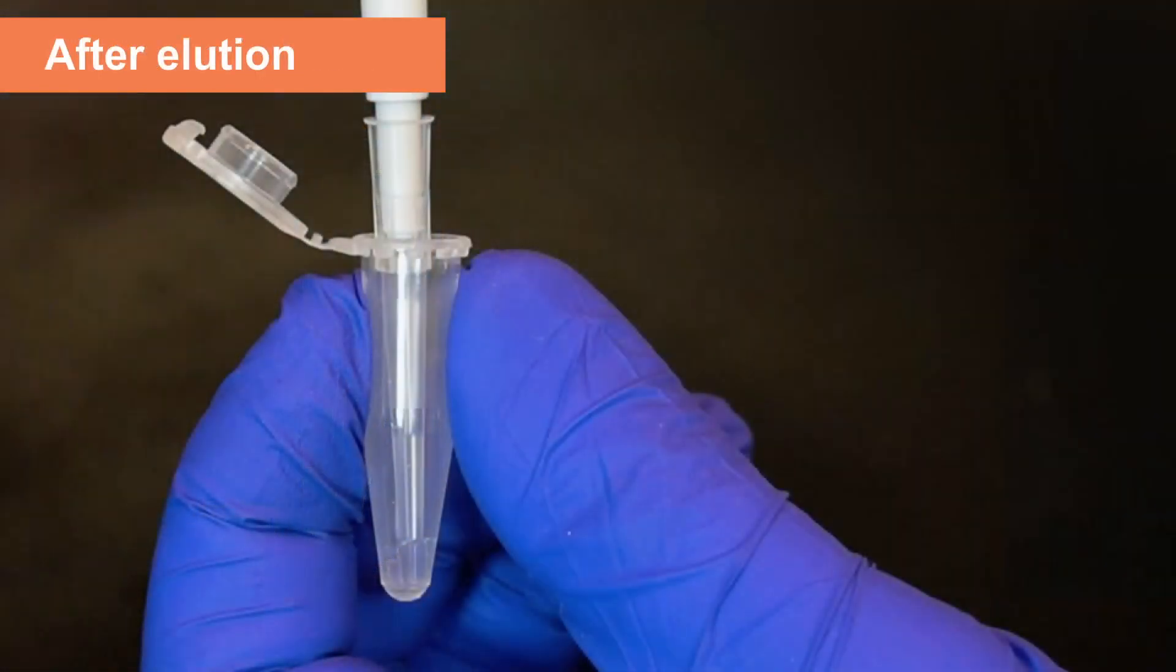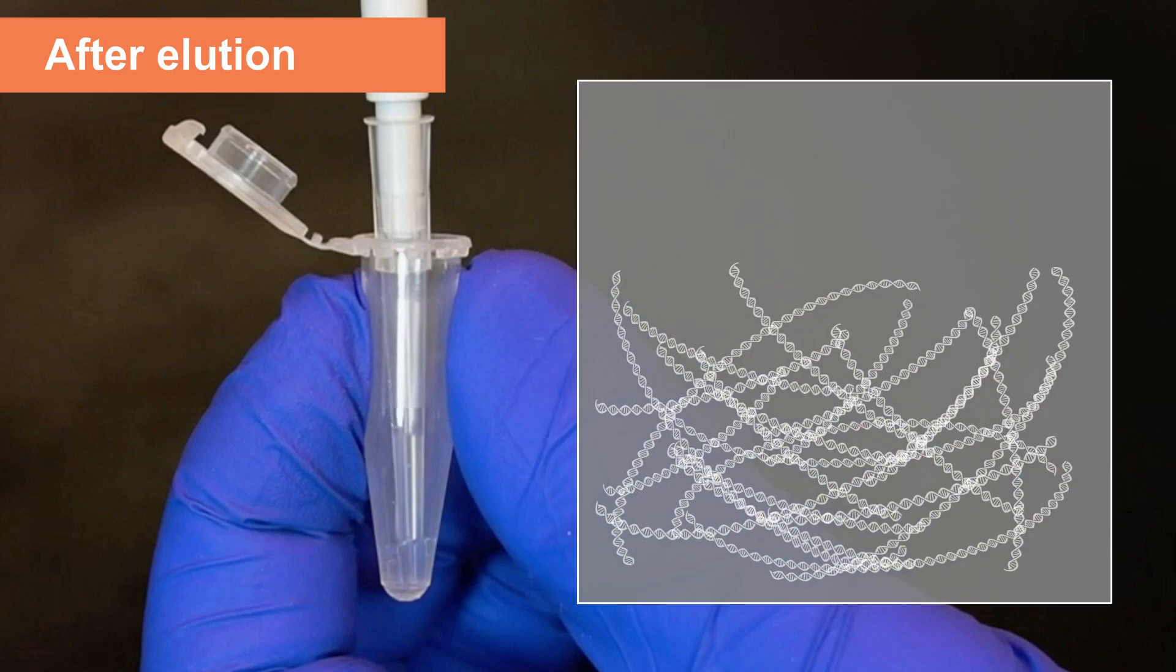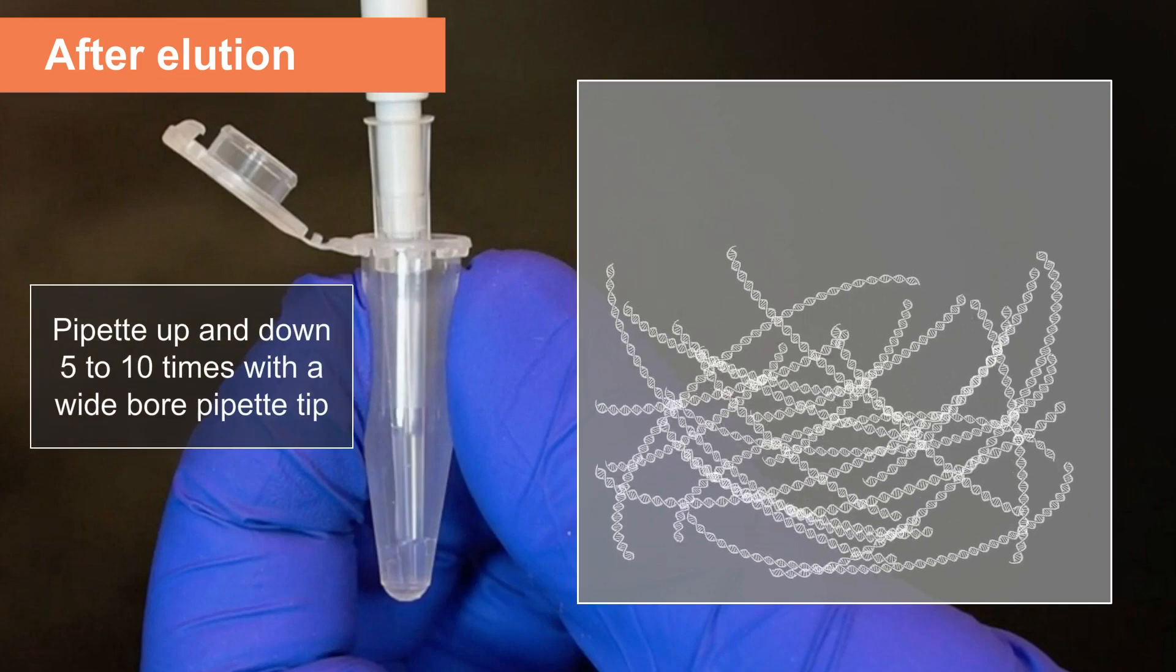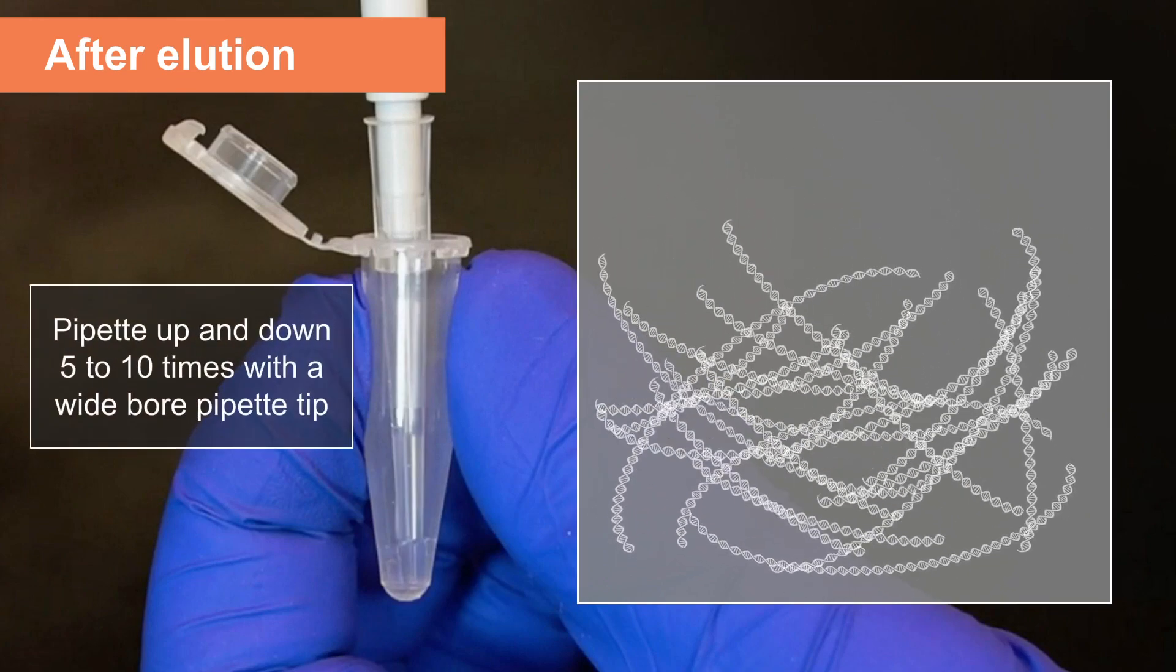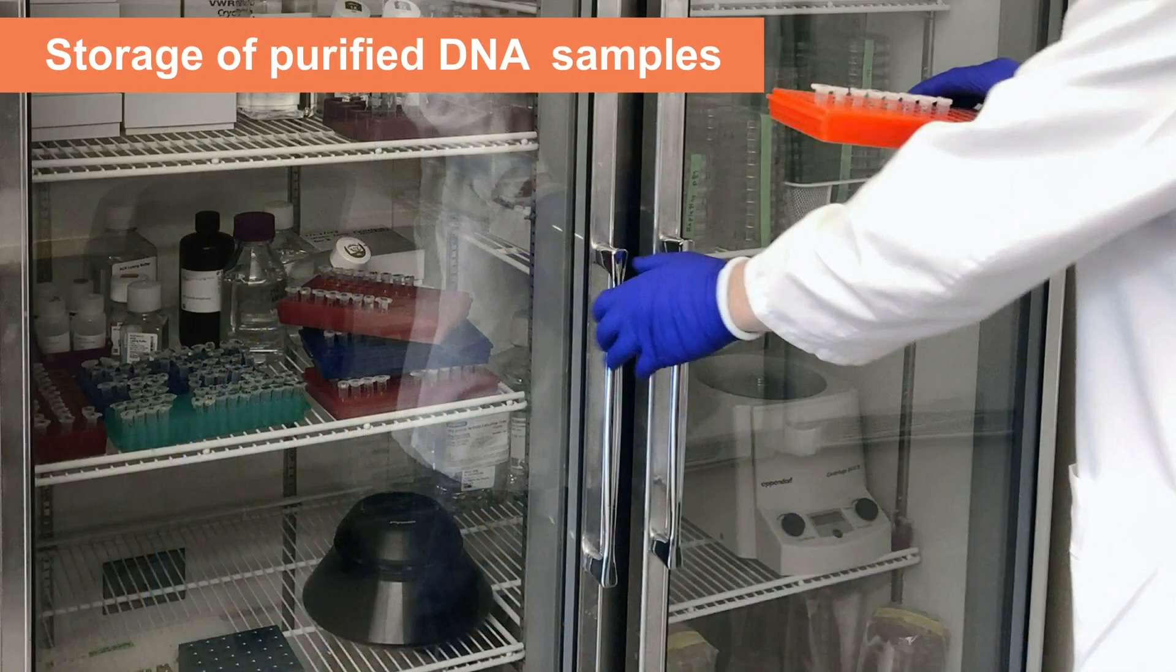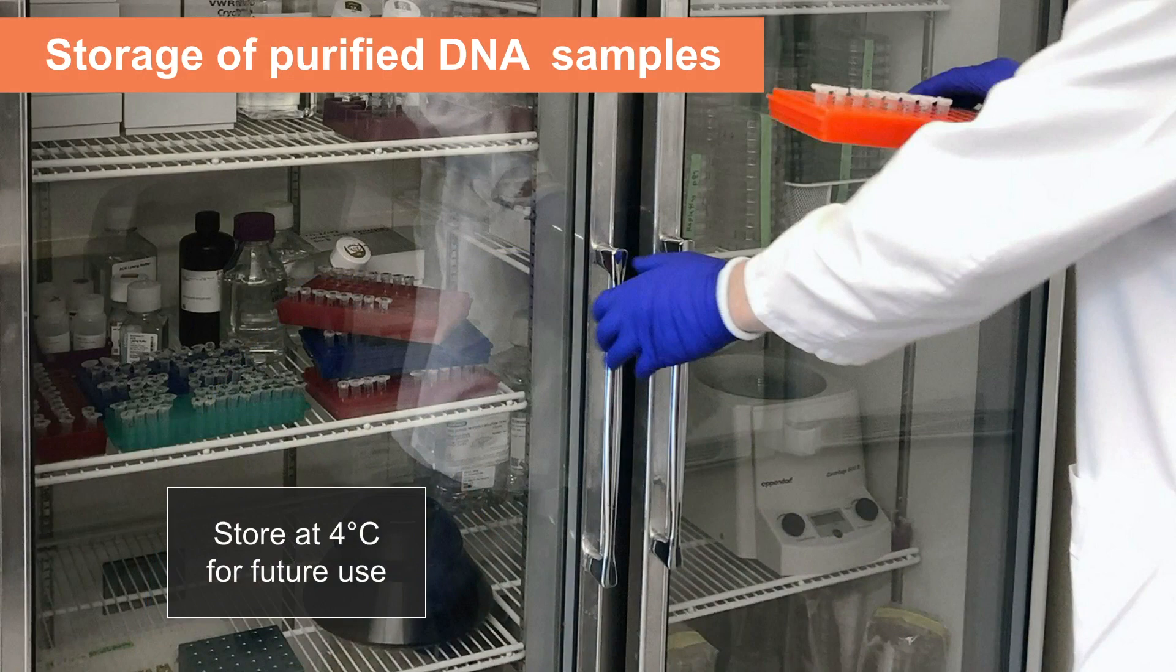After elution, high molecular weight genomic DNA requires further manipulation before use and measurement. The eluted DNA will not be uniformly dispersed and often clumps in certain parts of the solution. Pipetting up and down 5 to 10 times with a wide-bore pipette tip can help ensure that any visible clumps of DNA are dispersed into the solution. Purified DNA samples can then be stored at 4 degrees Celsius for future use or can be prepared for downstream use as described in the product manual.